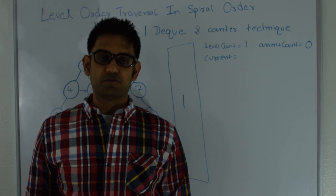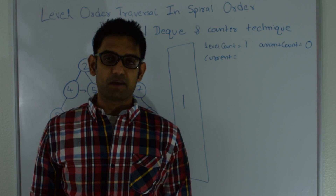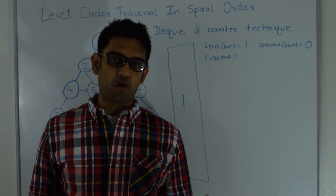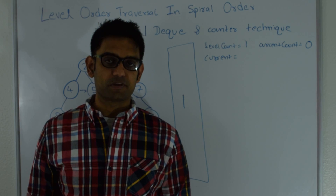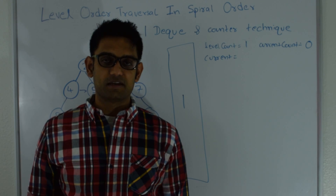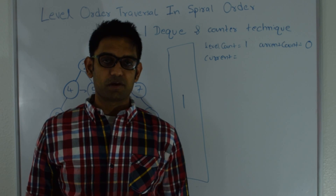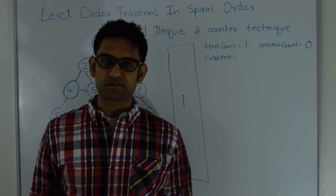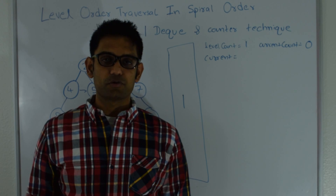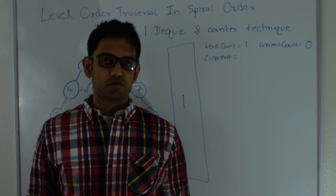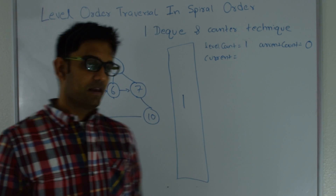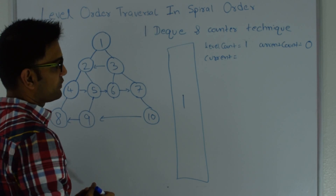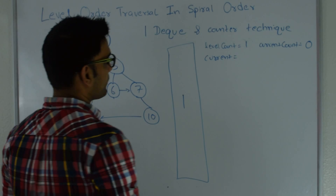Technique number three uses a deque and a count. In the previous technique I used a null delimiter to separate the top and bottom portions of the queue to create two virtual stacks. Now I'm going to use a count to maintain two stacks in one queue. I put the root into the queue from the top. My level count is 1 and my current count is 0.